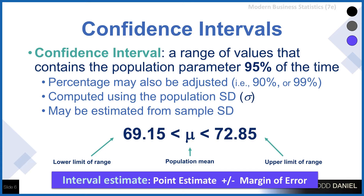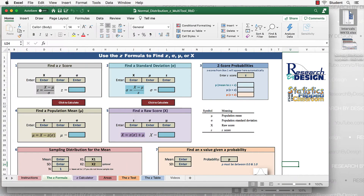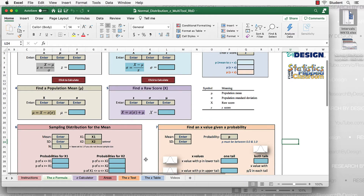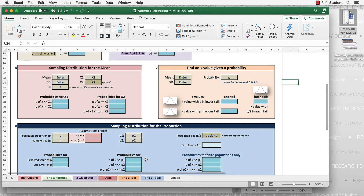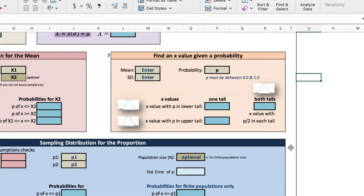When we don't know the population standard deviation, we estimate it from the sample, which has implications for the math involving degrees of freedom. To figure out the confidence interval we need to know what is 95% of our normal curve. We can calculate that using the normal distribution multi-tool we've been using previously — specifically the Z formula tab, box number 7, which is for finding an x value for a given probability.